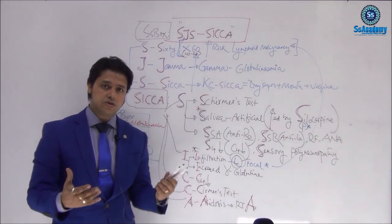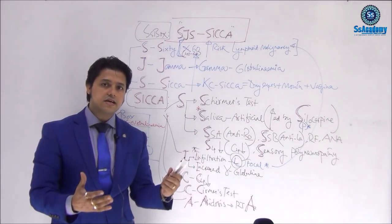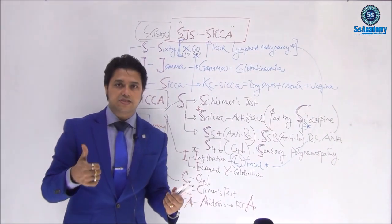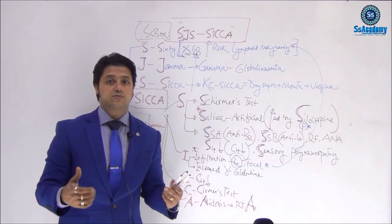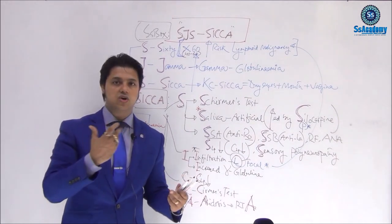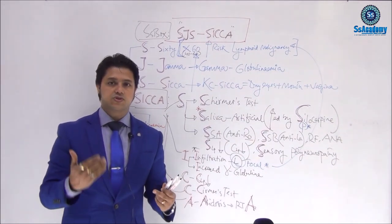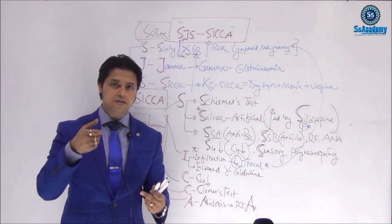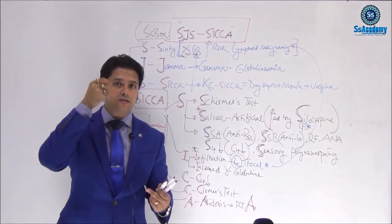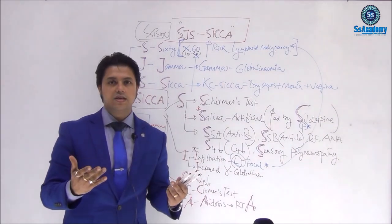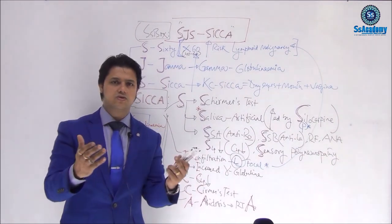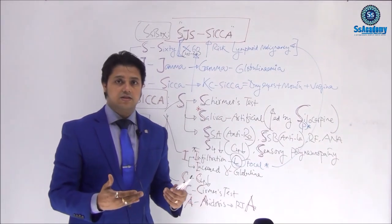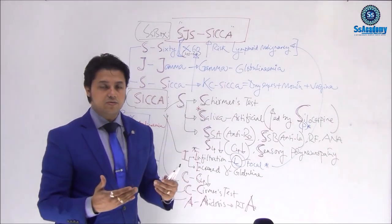So Sjogren's syndrome SJS CICA helps remember all features: S for 60-fold lymphoid malignancy risk, Z for gamma (hypergammaglobulinemia), S for SICA (keratoconjunctivitis sicca — dry eyes, dry mouth, and dry vagina). Within CICA, S for Schirmer's test — a filter paper test where the normal range is 5–10 mm of soaking; in Sjogren's syndrome it is less than normal.